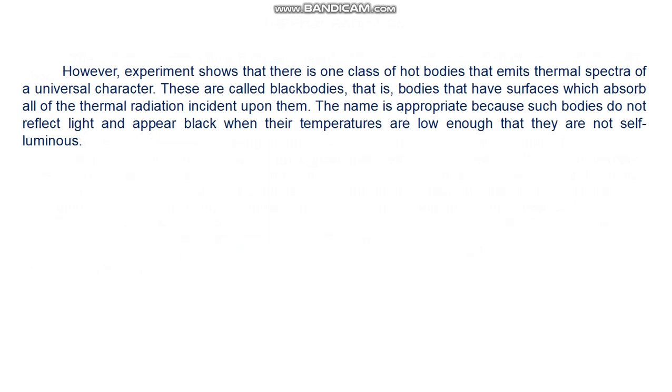Generally speaking, the detailed form of the spectrum of thermal radiation emitted by a hot body depends somewhat upon the composition of the body. However, experiment shows that there is one class of hot bodies that emits thermal spectra of a universal character. These are called black bodies, that is, bodies that have surfaces which absorb all of the thermal radiation incident upon them. The name is appropriate because such bodies do not reflect light and appear black when their temperatures are low enough that they are not self-luminous.